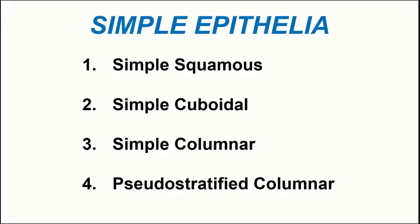Here we will examine the four types of simple epithelia: the simple squamous epithelia, the simple cuboidal epithelia, simple columnar epithelia, and finally the pseudostratified columnar epithelia. Let's see where these are all found.